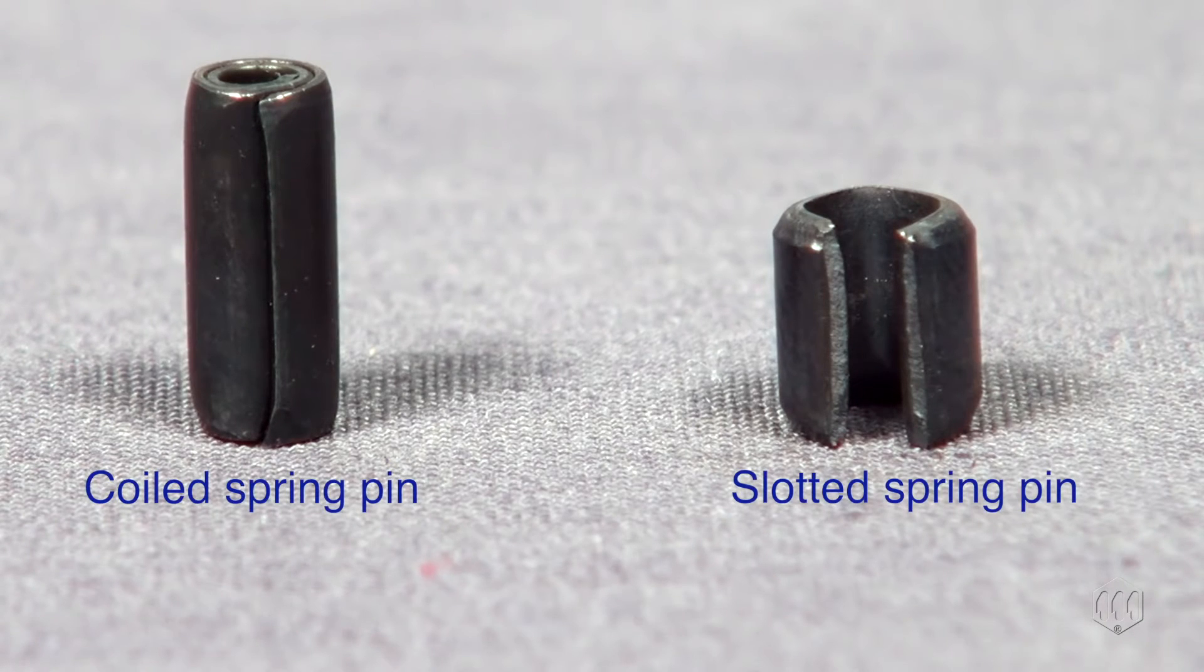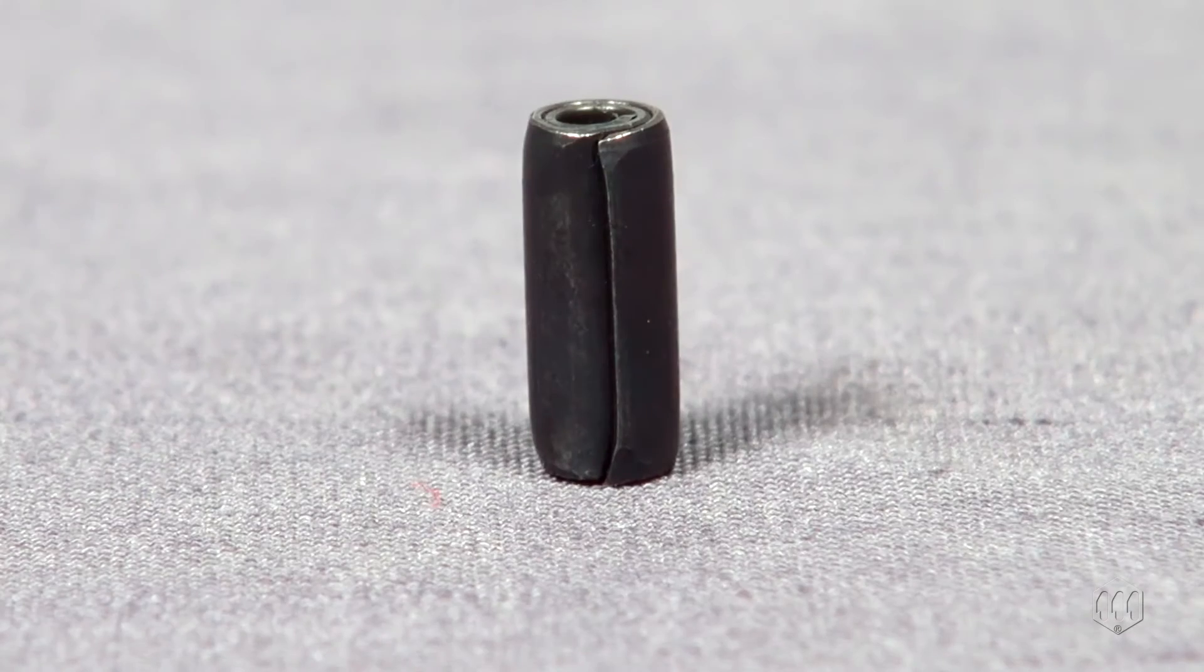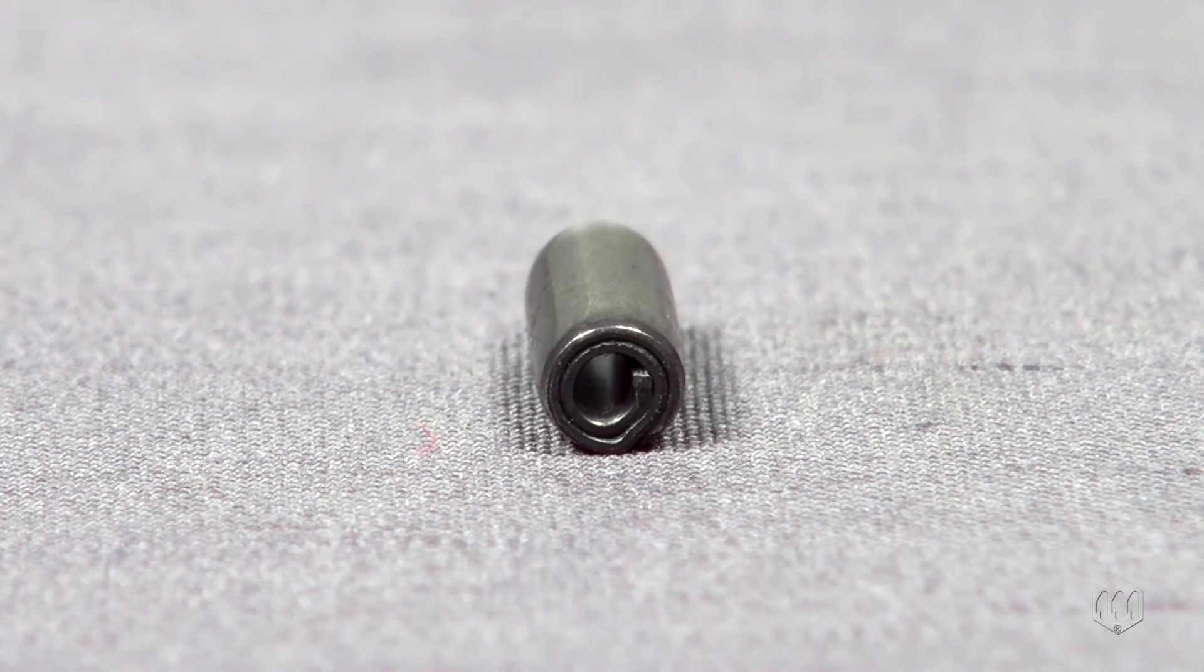There are two types of metric spring pins: coiled spring pins and slotted spring pins. Coiled spring pins are made out of a flat strip of steel rolled into a cylinder. If you look down at it from one end, you will see a spiral pattern.